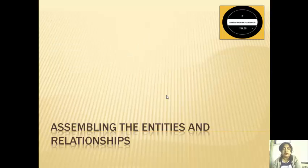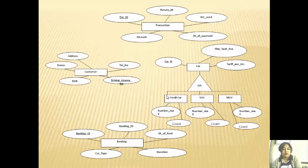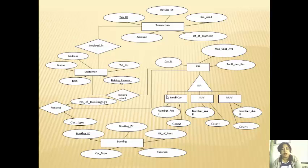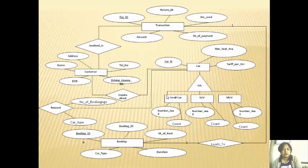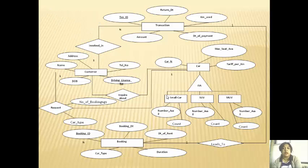Now we have identified all the associations, entities, and attributes. It is time to assemble the entities and relationships into one ERD. Take care and manage the space. Write the entities and attributes and connect them with lines representing the particular relationship. It is compulsory to write the cardinality — please don't forget, as cardinality is compulsory in the ER model. Also make sure the lines do not cross each other, as a neat diagram leads to better understanding. That's all about this case study on the Entity Relationship Model. If you have any doubts, mention them in the comments or send me mails. Thank you so much for listening.